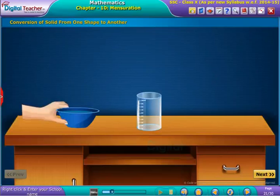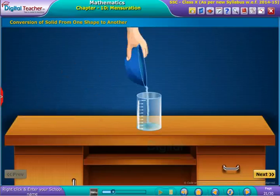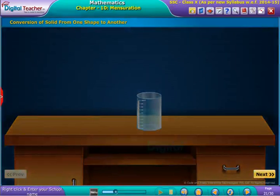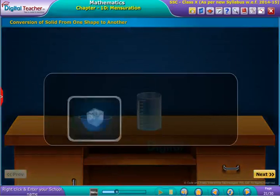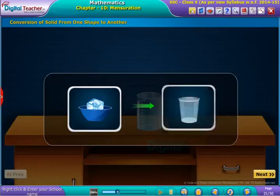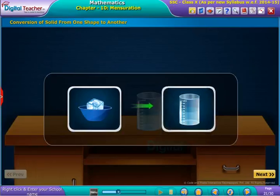Hence, we conclude that the cube, which is in solid shape, is converted into the shape of a cylindrical liquid container.